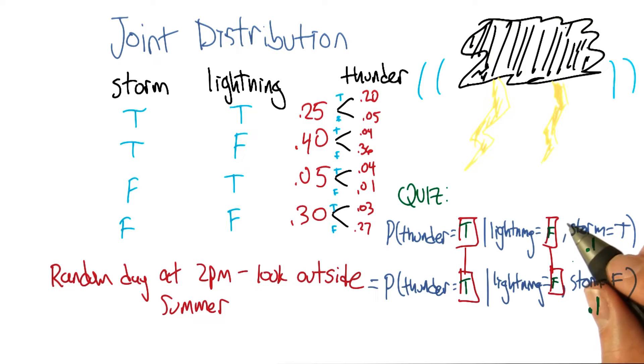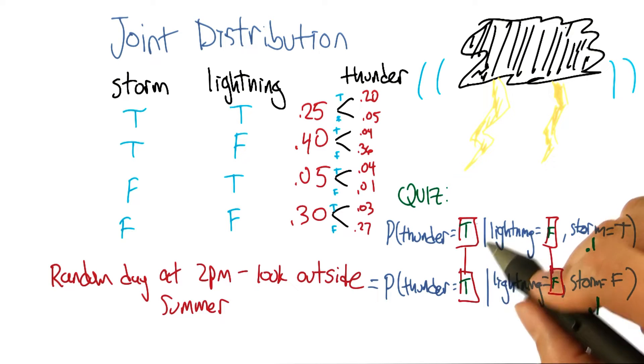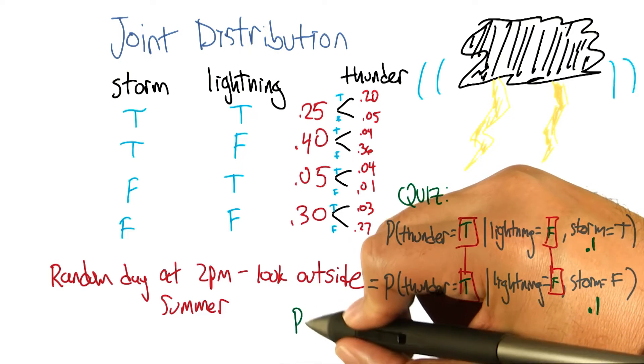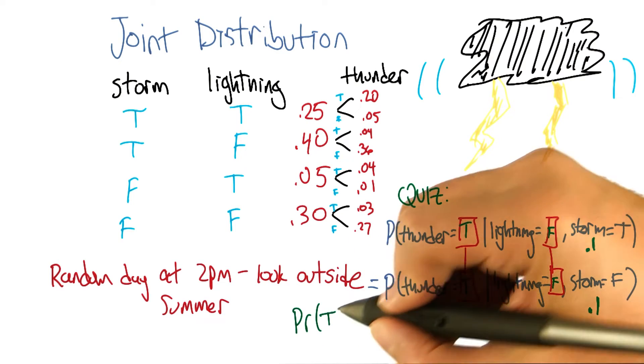It turns out that, in fact, no matter what you type into these two boxes, it does, in fact, work. And what does that tell us? Well, it tells us that it doesn't matter what the value of storm is. We can figure out the value of thunder by only looking at the value of lightning.